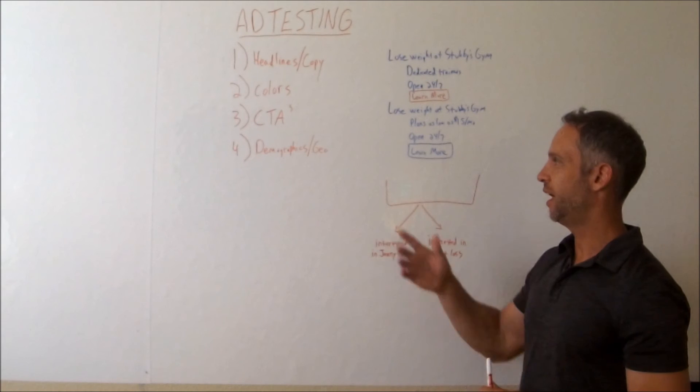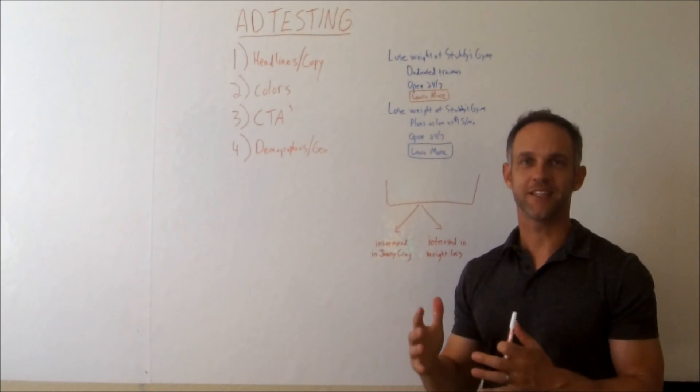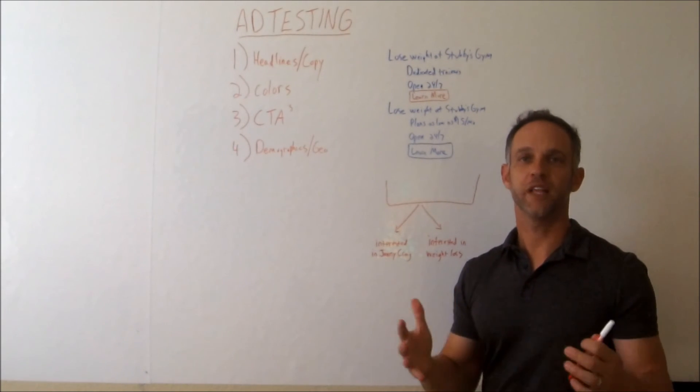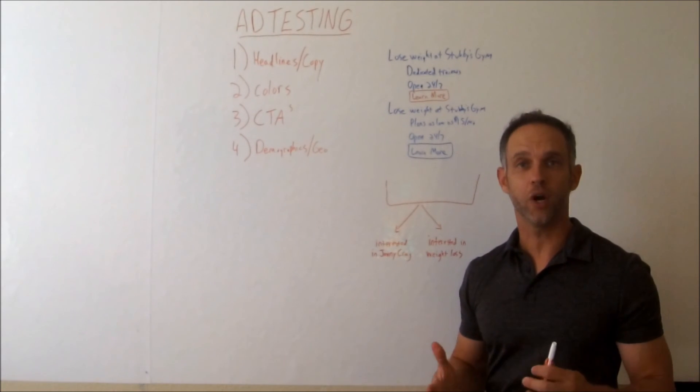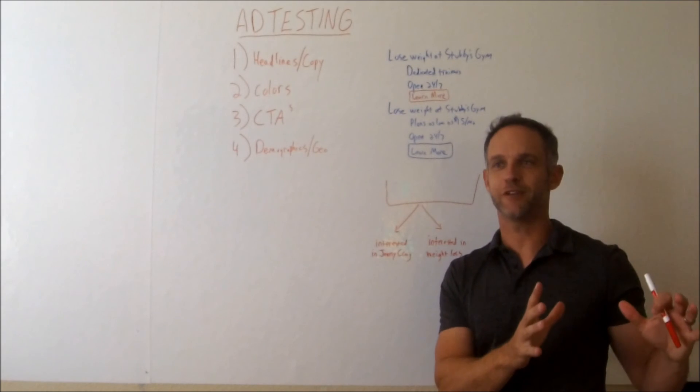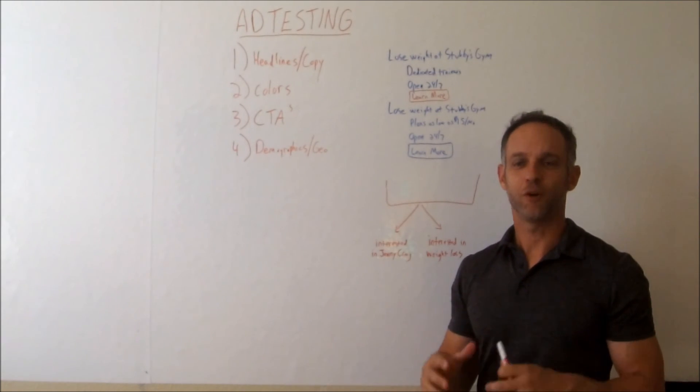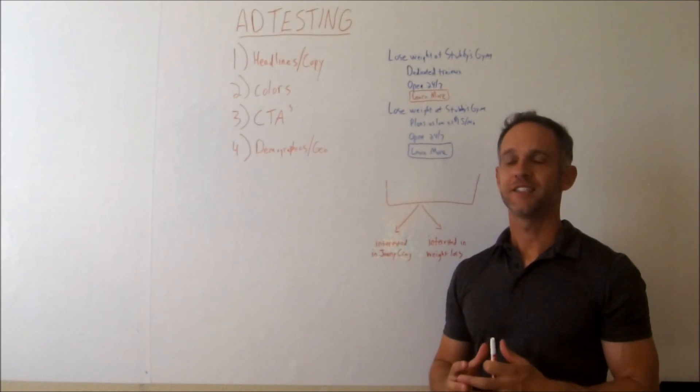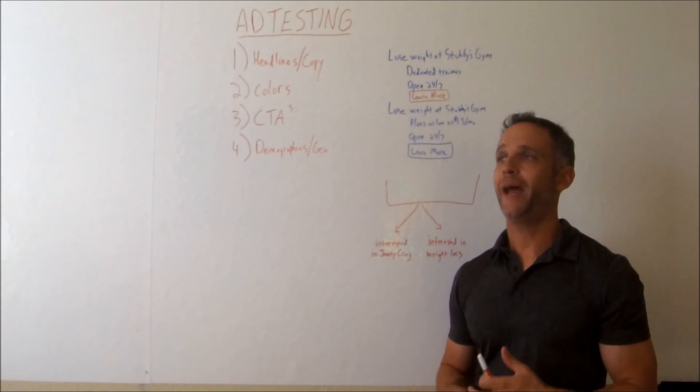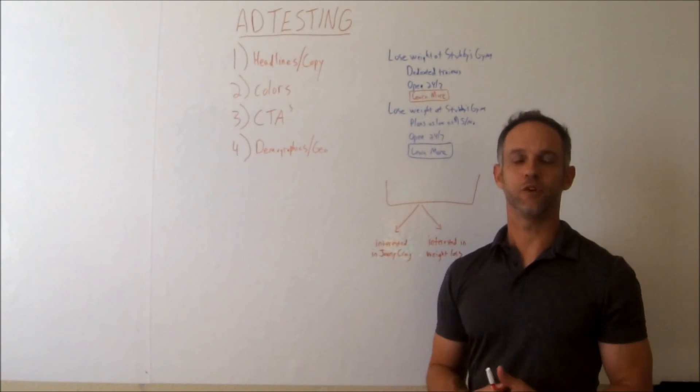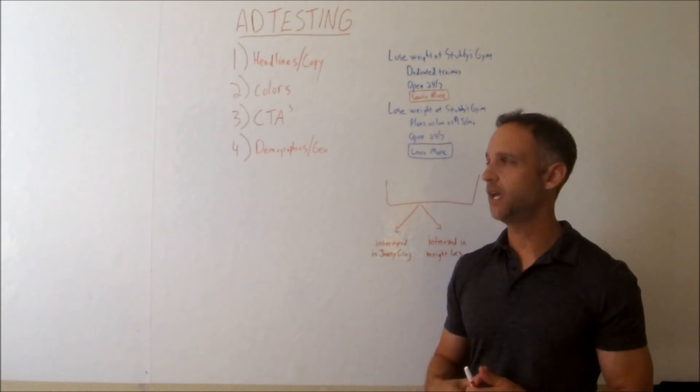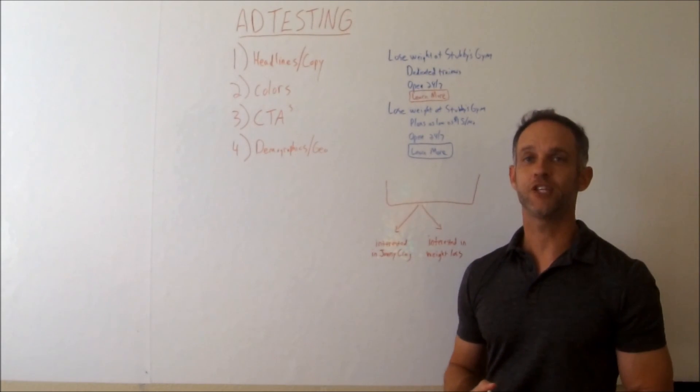In fact, I've ran ads where Texas, state to state, Texas seems to get more clicks on certain products. In the case I'm referring to is food products. Not to say that Texans like food any more than anybody else, but for that particular product that I was marketing, Texas responded better because perhaps in Texas, they're used to eating that food or a variation of that food and it enticed them in some way. So you want to test the geographic variations of ads as well.